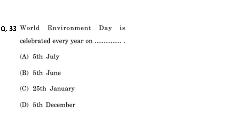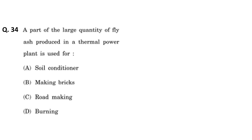The thirty-third question: World Environment Day is celebrated on which date? This question is from the people and environment section. We should know the important days related to at least one or two topics from every section of the syllabus — at least 30 to 40 days related to environment topics. The correct answer: World Environment Day is celebrated on 5th June.